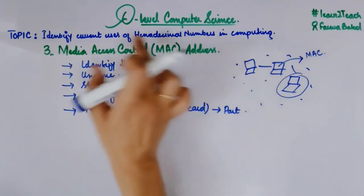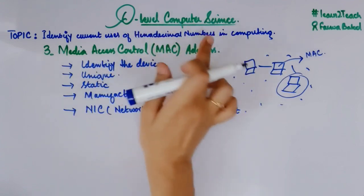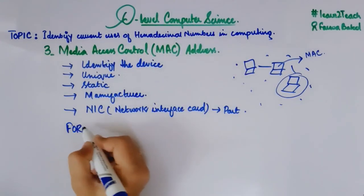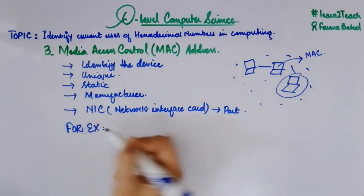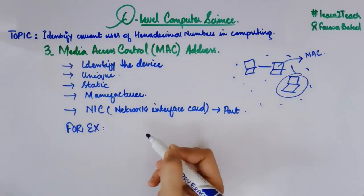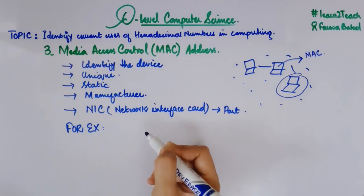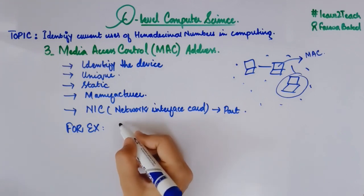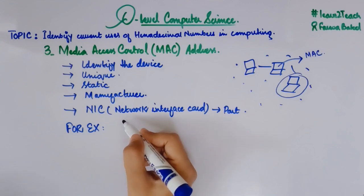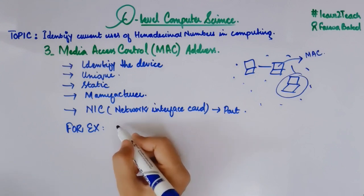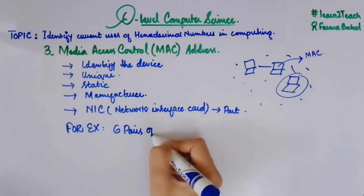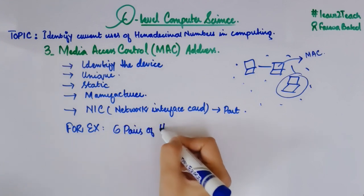Now let me tell you how a MAC address is represented in the form of hexadecimal numbers. The structure of a MAC address comprises 6 pairs of hexadecimal digits.